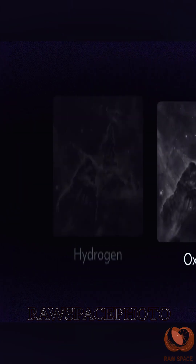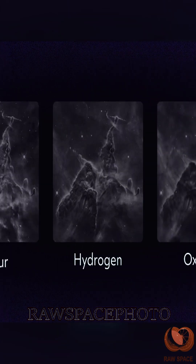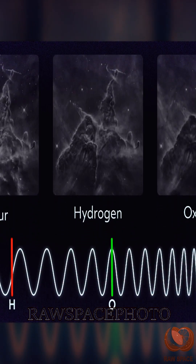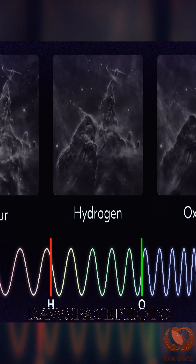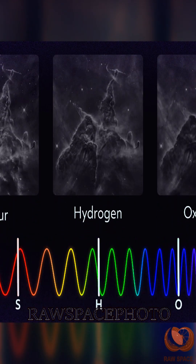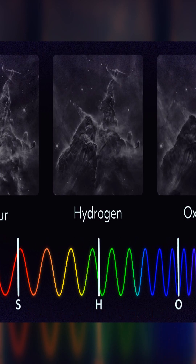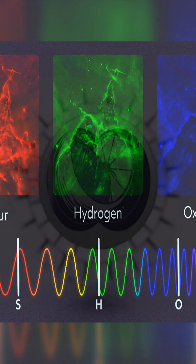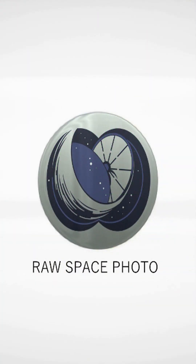Hubble observes the same object multiple times using different filters. Image processors then assign those images a color based on their filtered wavelength. The longest wavelength becomes red, medium becomes green, and the shortest blue, corresponding to the light sensors in our eyes.